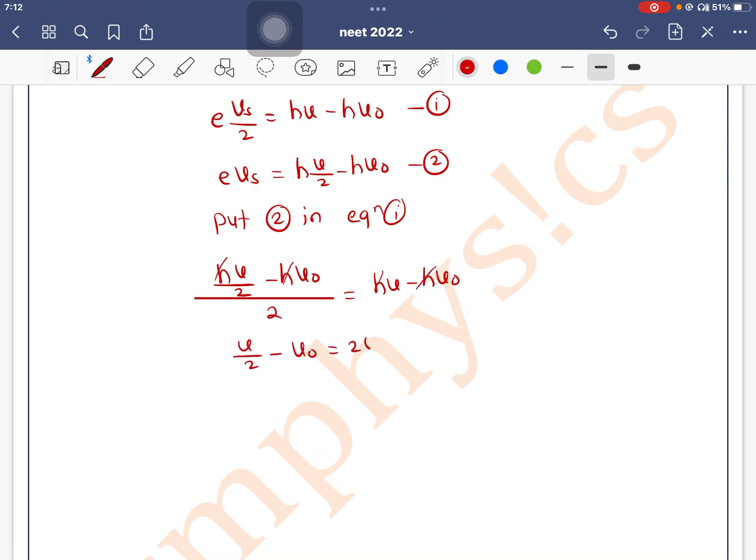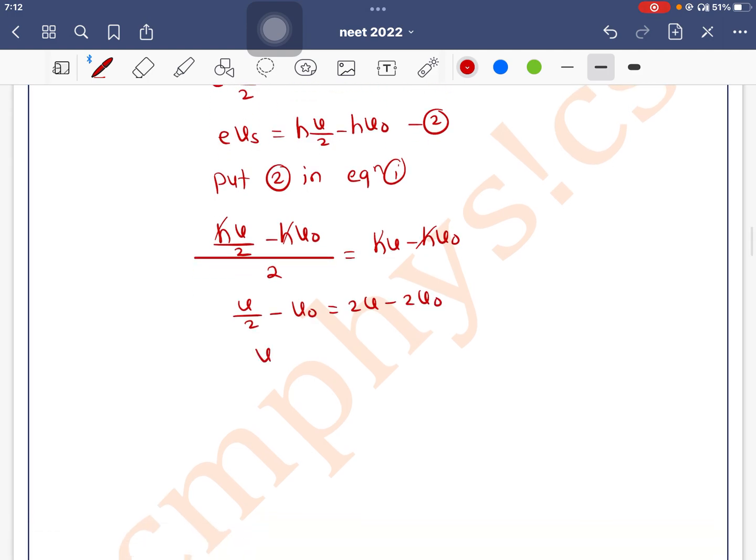So nu by 2 minus nu0 equals 2 nu minus 2 nu0. We can write nu by 2 minus 2 nu equals minus 2 nu0 plus nu0.